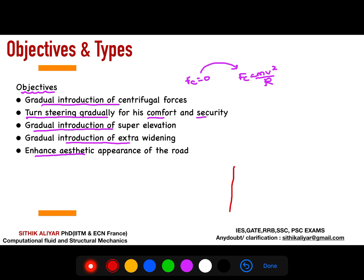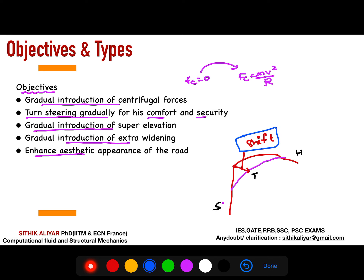When a straight road is connected directly to a horizontal curve it looks abrupt, but with the pink-colored transition curve connecting them it looks smoother and enhances the aesthetic appearance. Also, because of the introduction of the transition curve, there is a shift — the main horizontal curve gets shifted inwards. This shift may be asked in a one-mark question.